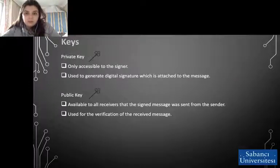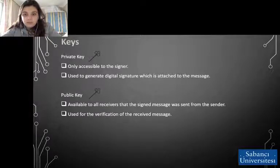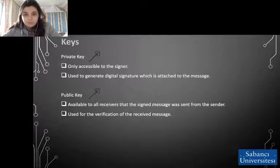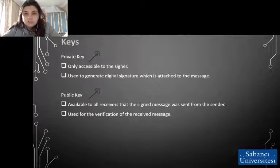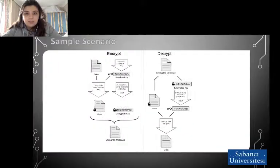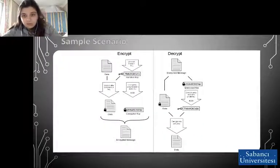What are these private and public keys? The private key, as we can understand from the name, is only accessible to the signer. It is used to generate a digital signature that is attached to the message. The public key is available to all receivers to verify that the signed message was sent from the sender. It is used for verification of the received message. We can see here a key creation and usage scenario with the RSA algorithm, which follows the steps we just talked about.